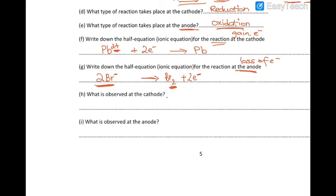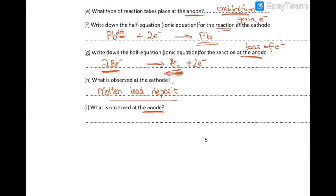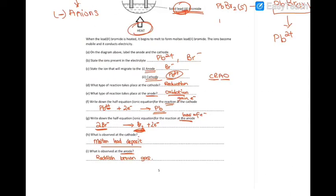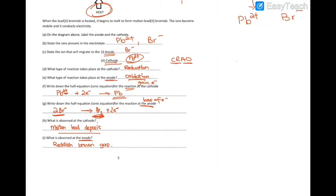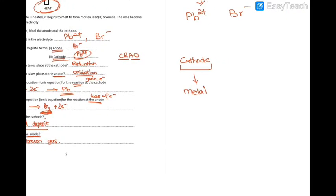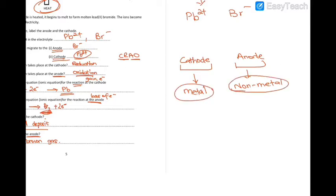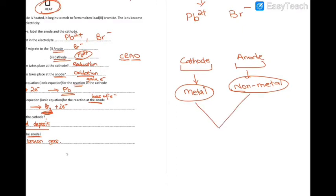What do you observe at the cathode? Because lead is formed, you're going to see molten lead deposit. What do you observe at the anode? Because bromine is produced, you're going to see a reddish-brown gas. In general, when doing electrolysis of a molten ionic compound, at the cathode the metal cation migrates and the metal is formed; at the anode the non-metal anion migrates and the non-metal is formed. These come from the ionic compound — say ionic compound AX: metal A, non-metal X.